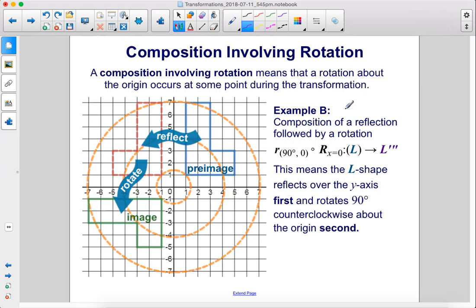Here's another example. Here we have a composition of a reflection followed by a rotation. That would put the rotation first in the notation here and then the reflection.